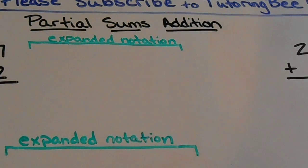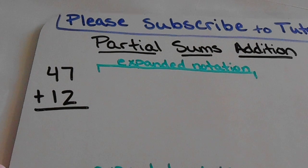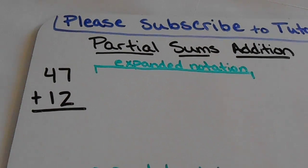So this is a couple of problems that I have set up for us to try today. First we're going to start with 47 plus 12. The reason it's called Partial Sums is because you're actually going to break these numbers down into their parts.